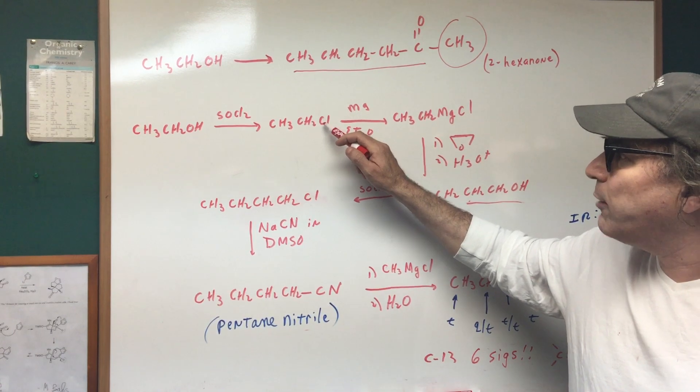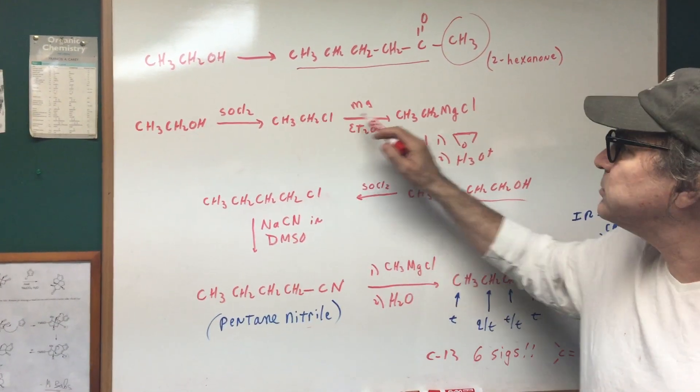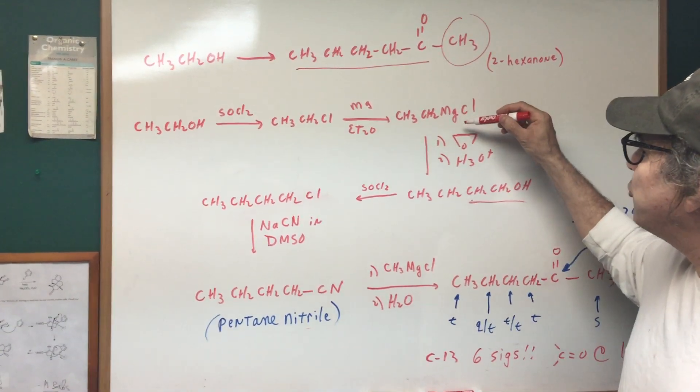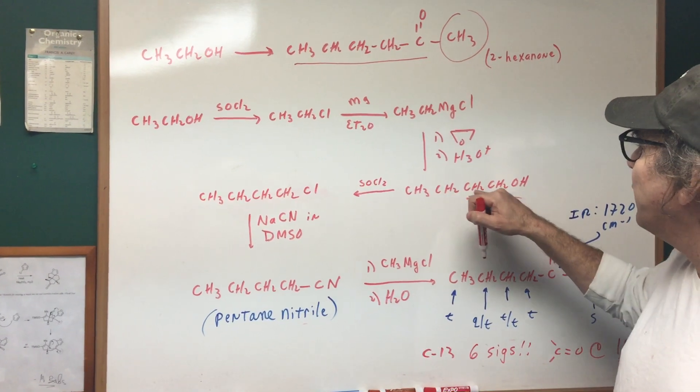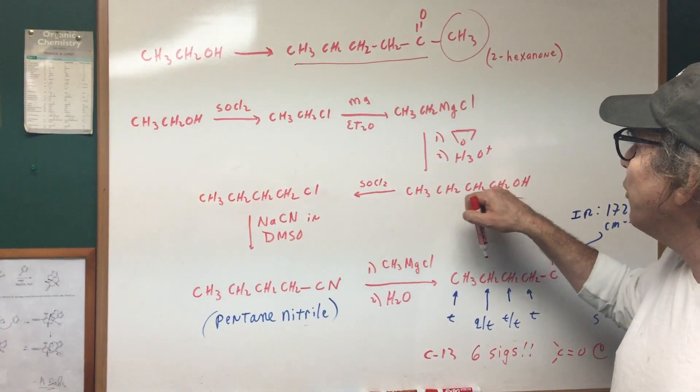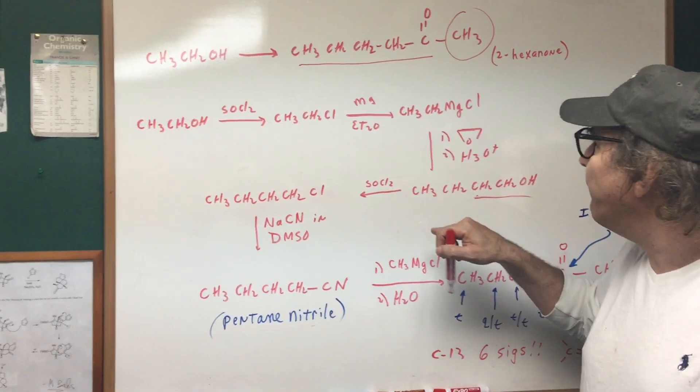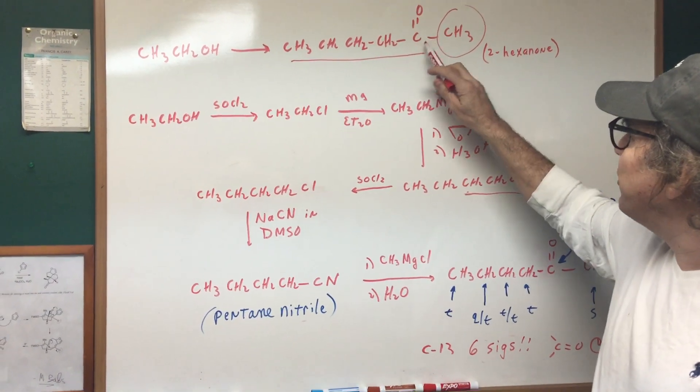So one more time, the alcohol into the halide. That we've done many times. Then we made the Grignard. We treat the Grignard with oxirane, and we get a primary alcohol with one extra carbon. Now, the question is, I've got to build on some more.